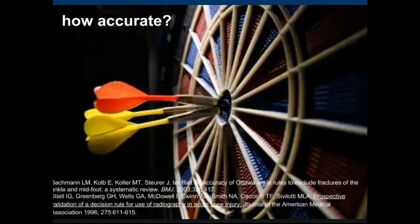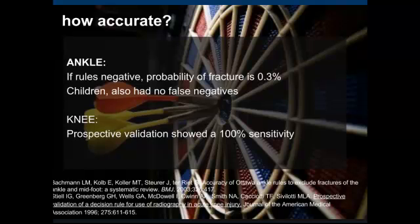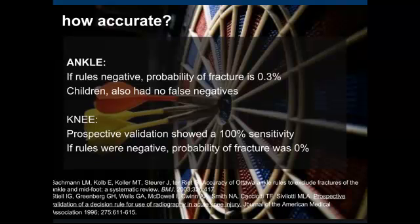How accurate are these rules? For the ankle, if the rules are negative, the probability of fracture is 0.3%. Make sure to tell your patients that's the reason you're not getting an x-ray. For children, studies have shown there were no false negatives. For the knee, the prospective validation shows 100% sensitivity — meaning just like the ankle, if the rules are negative, the probability of fracture is very low, about 1% in these studies.